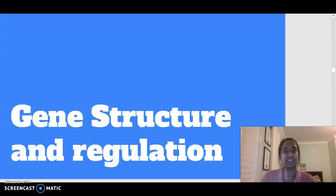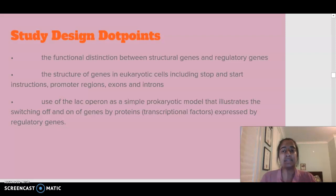In terms of looking at gene structure and regulation, the dot points we are going to focus on today are the functional distinction between structural genes and regulatory genes, the structure of genes in eukaryotic cells including stop and start instructions, promoter regions, exons and introns, and we're going to use the example of the lac operon as a prokaryotic model that illustrates the switching of genes on and off that are expressed by regulatory genes.